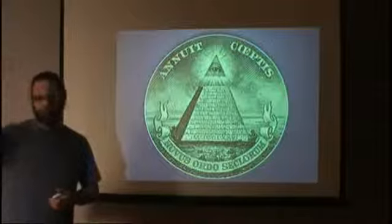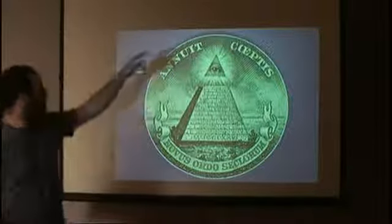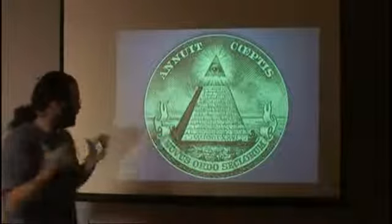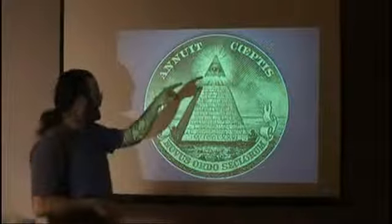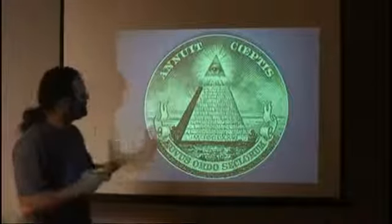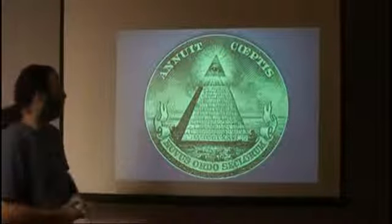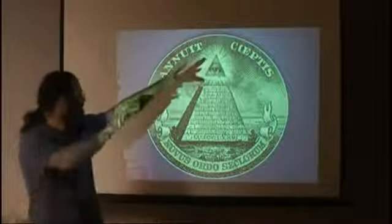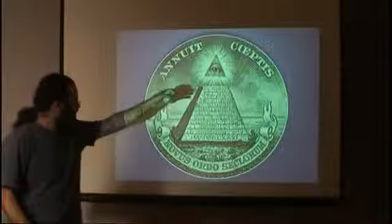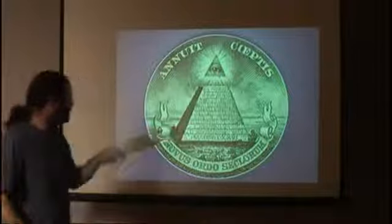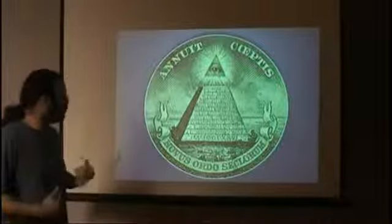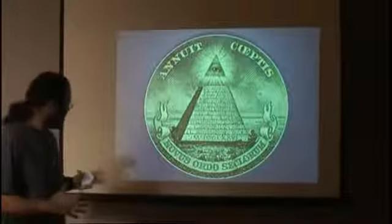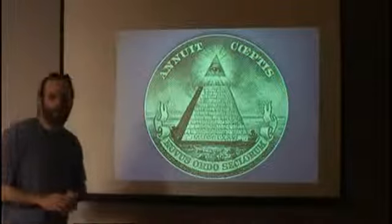We see the elements of the symbol: the words Annuit Coeptis at the top, then a pyramid with its capstone missing, an incomplete pyramid. Atop the pyramid is a two-dimensional slit or opening in the sky, from behind which we see an eye bathed in light. The pyramid is comprised of 13 courses of brick, the bottom of which has a date inscribed in nine Roman numerals. There is then a sash with the words Novus Ordo Seclorum written at the bottom.